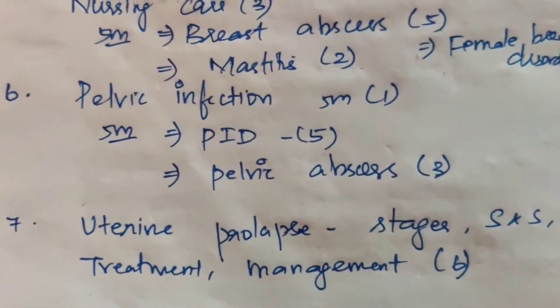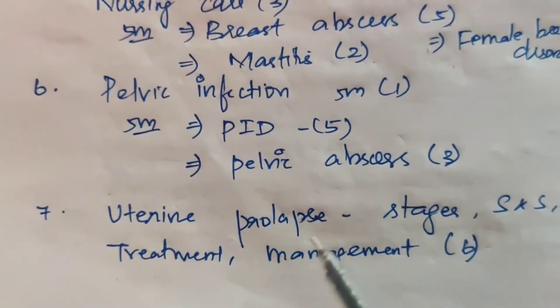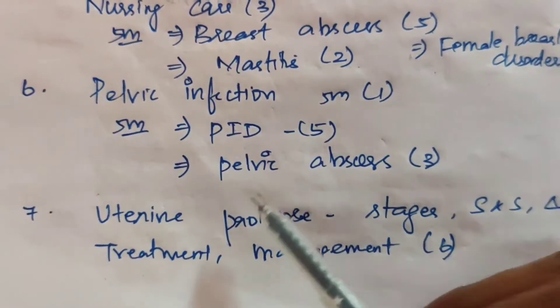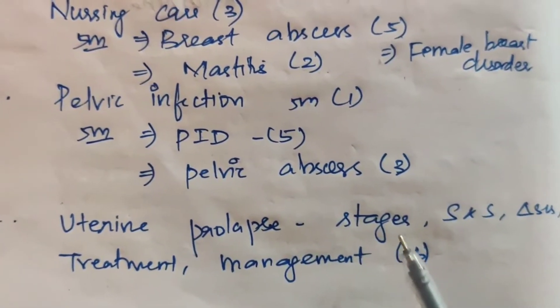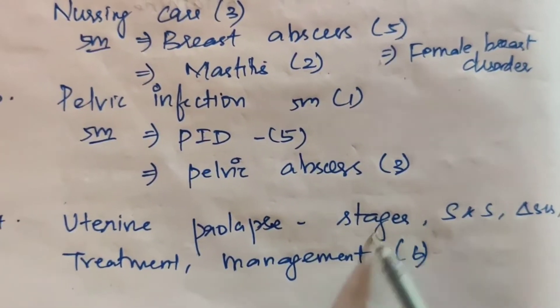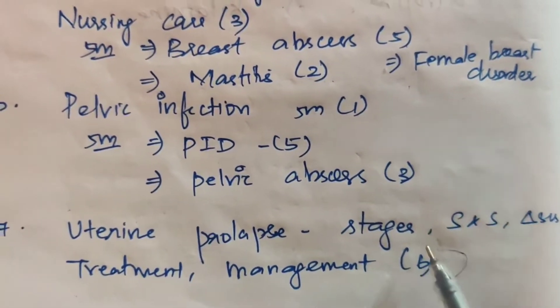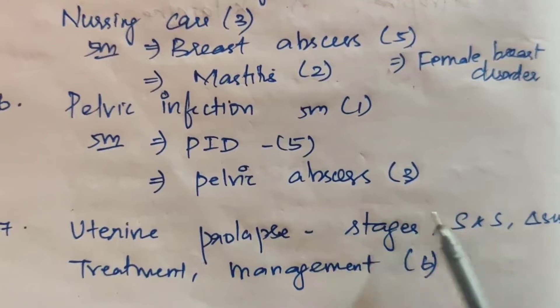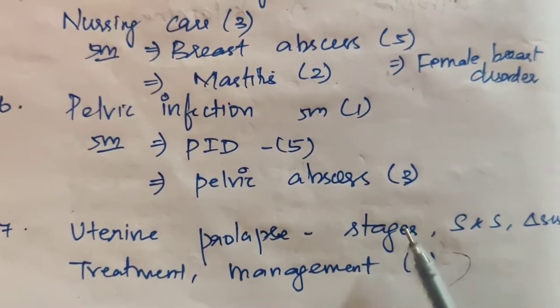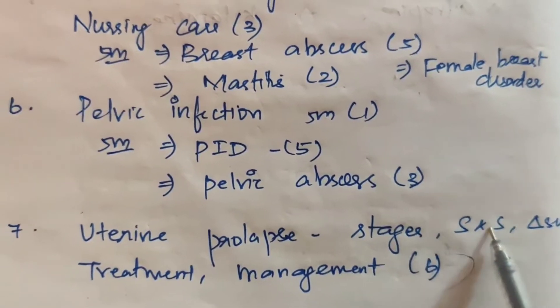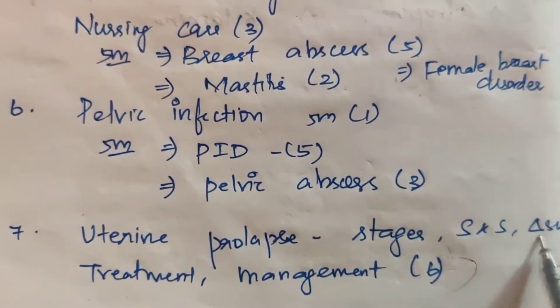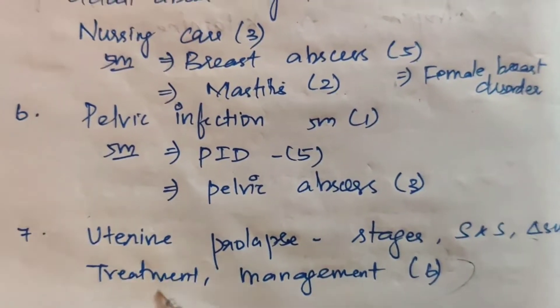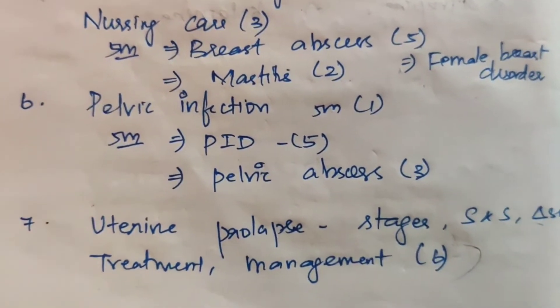Seventh one: uterine prolapse — mentioned six times overall. Particular topics covered include stages, signs and symptoms, diagnosis, and treatment and management.